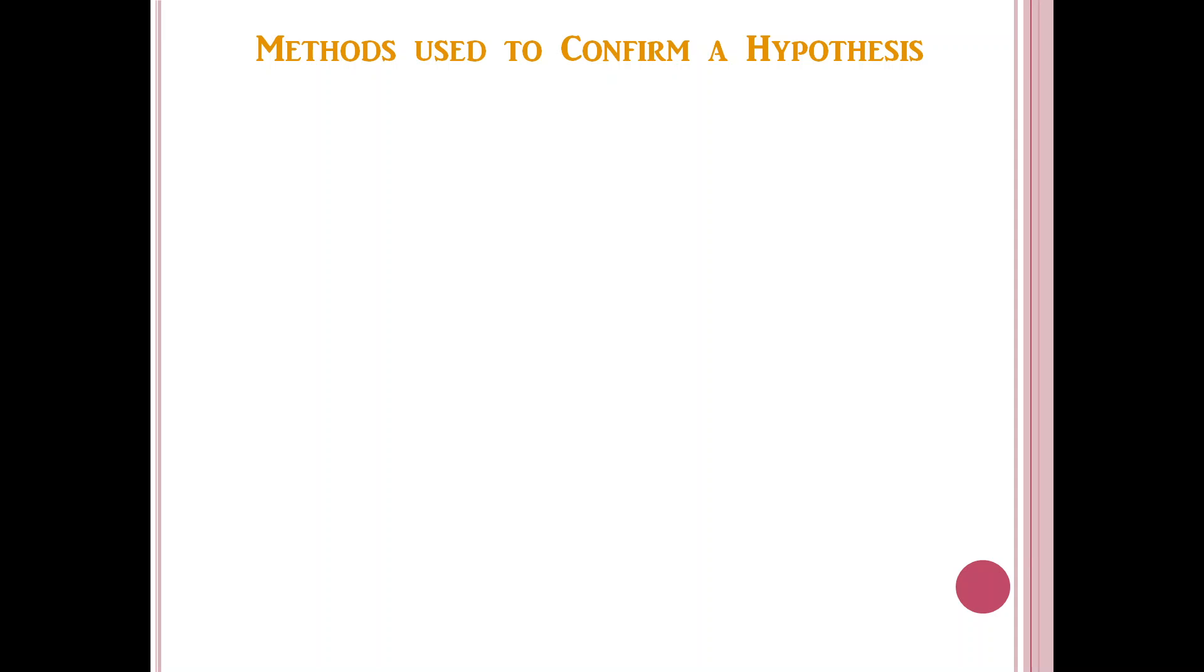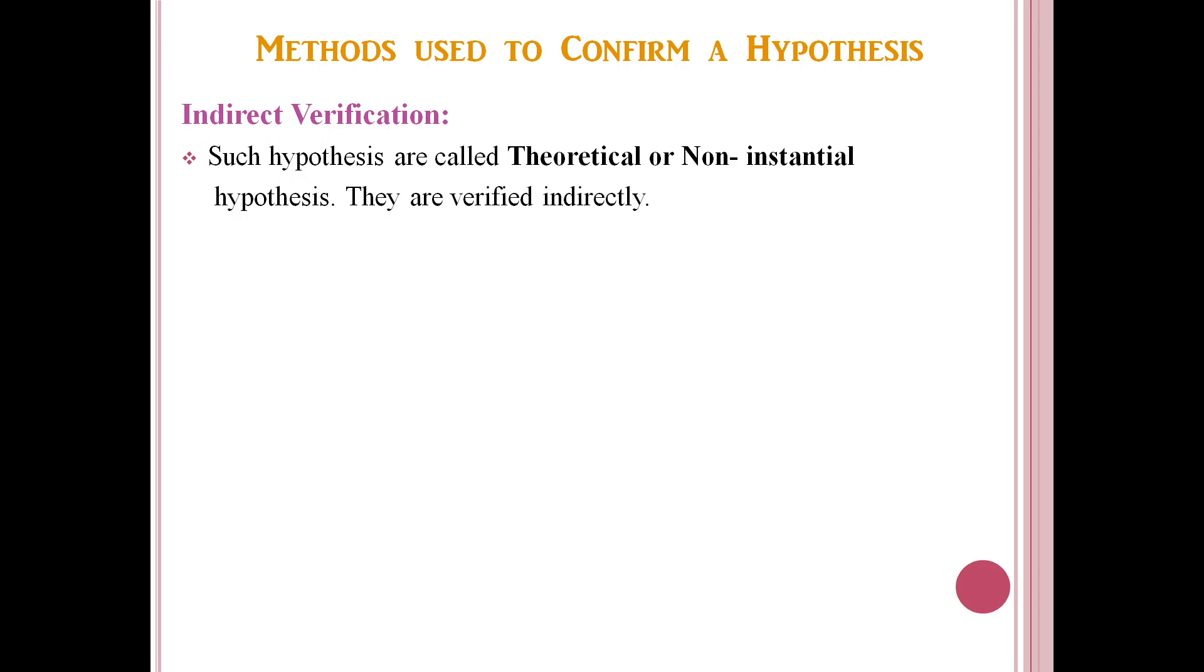Now we see that most of the scientific hypothesis cannot be verified directly because they deal with unobservable entities such as electrons, protons, gravitation, electromagnetic waves, etc. Such hypothesis are called theoretical or non-instantial hypothesis and they have to be verified indirectly.